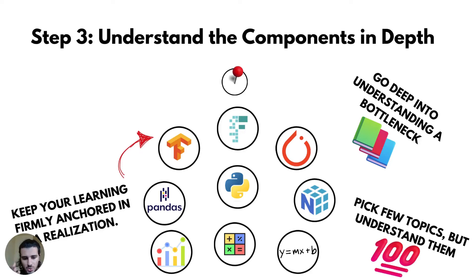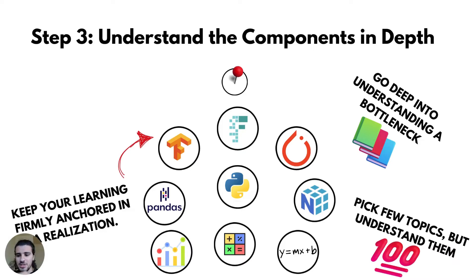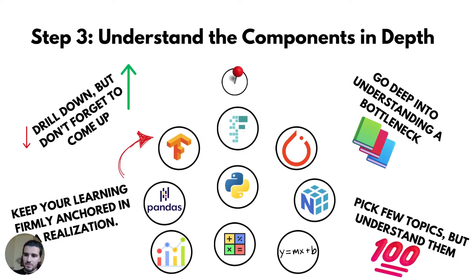Pick very few topics at this point from the bottleneck and understand them a hundred percent. Don't try to switch — really understand them. If you have to take a course in linear algebra to understand the specific thing that's happening, do that. Because the thing with the deep learning knowledge graph is that a good understanding of one of these nodes will have a massive impact on all the other nodes. Finally, do the drill down, but don't forget to come back up. If you're at a LAPACK level of learning linear algebra and how it's working inside NumPy, you've gone way too far — there's infinite depth down there.